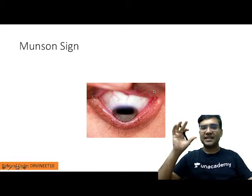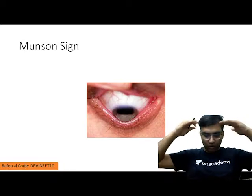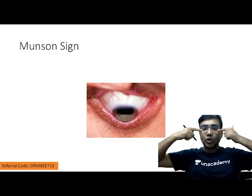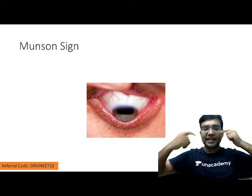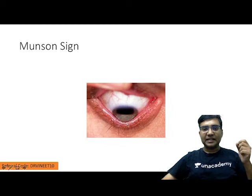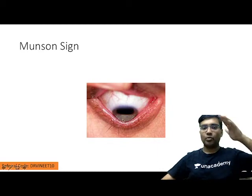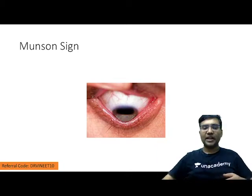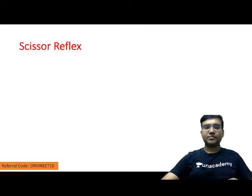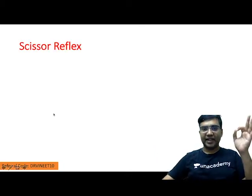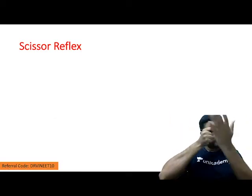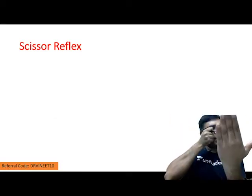The next is Munson's sign. When you look downwards, there is a lid bowing. If you can see here, there is a lower lid bowing on looking down, because you have a conical shaped cornea.